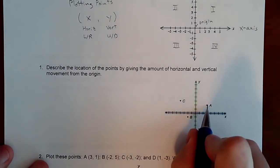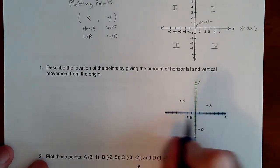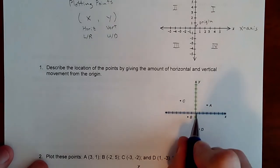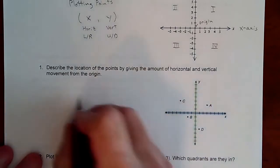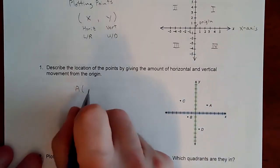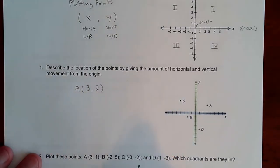Let's talk about a couple points here. If you're sitting here at point A, we want to describe the coordinate by looking at the left and right value from the origin. Point A is one, two, three to the right and up two. So point A is three to the right and up two, which is (3, 2).